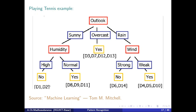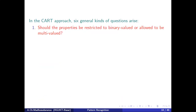This is your assignment. If you don't get pure leaf nodes with wind first, then your next question should be about humidity. Also, instead of outlook as the root node, try with humidity first as the root node, and then try with wind as the root node. Extend the tree to the end and see what happens. Thank you.